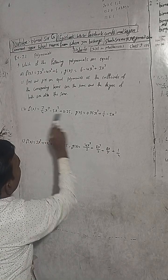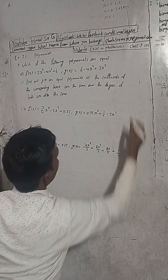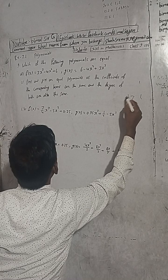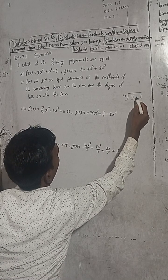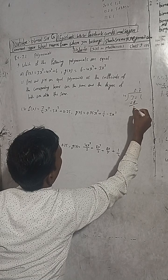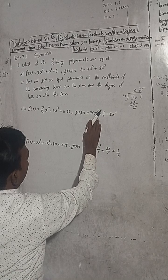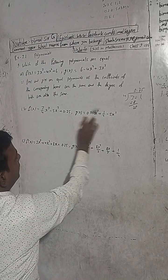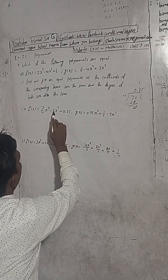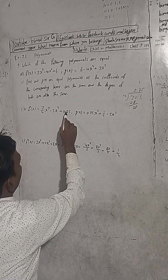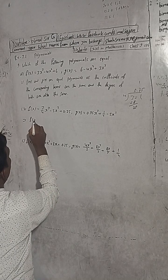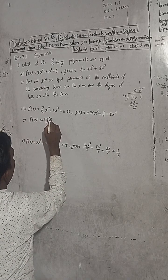In the same way, looking at the next pair: 3/4 — when you divide 3 by 4 you get 0.75. So the coefficient of x³ is 0.75 here and also 0.75 in the other polynomial. The coefficient of x² is minus 5, and 1/4 equals 0.25. So the coefficients match.